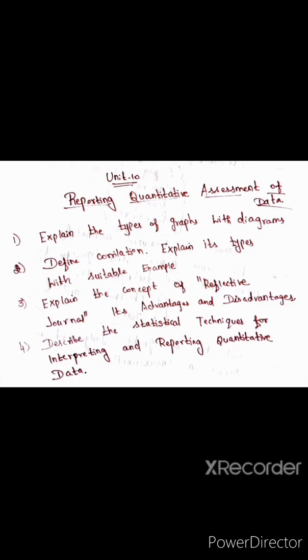Next, define correlation — correlation is to look at the records. Explain its types with suitable examples. Then, measures of central tendency — mean, median, mode — and measures of dispersion including standard deviation, mean deviation, and quartile deviation. Also, explain the concept of a reflective journal, its advantages and disadvantages, and describe statistical techniques for interpreting and reporting quantitative data.